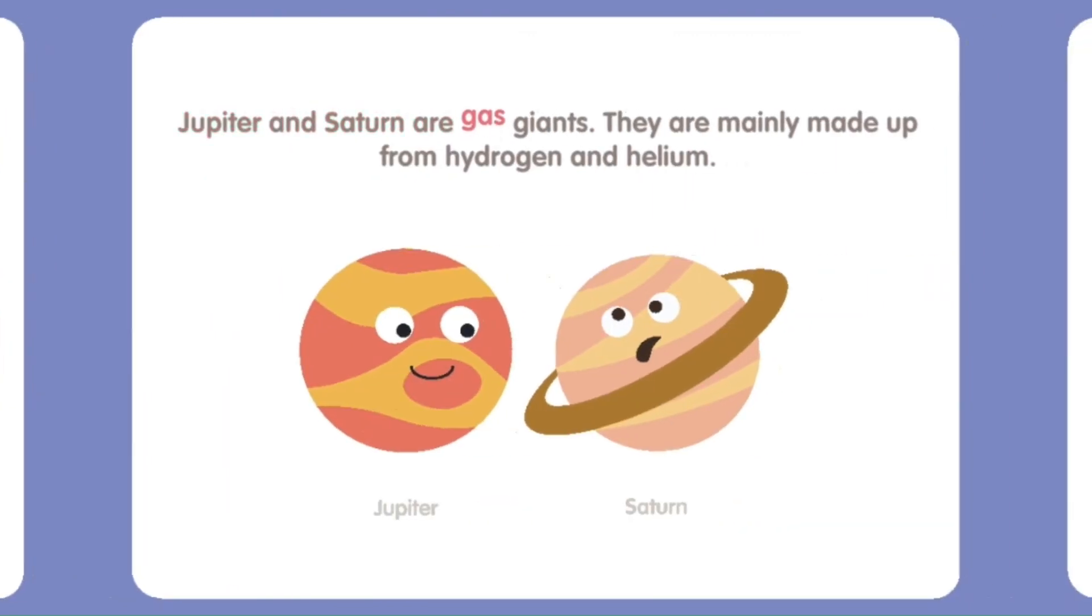Jupiter and Saturn are Gas Giants. They are mainly made up of hydrogen and helium.